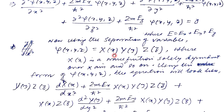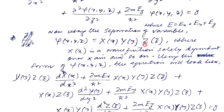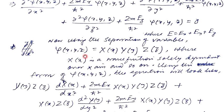The first wave function, capital X, is solely dependent on the x-axis. The second, capital Y, is solely dependent on y, and capital Z is solely dependent on the z-axis. These are the x-dependent, y-dependent, and z-dependent wave functions. Now, if we replace psi(x, y, z) with this form, the first term involves d²X/dx², treating y and z as constants.